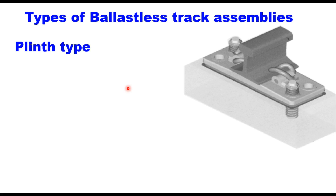There are different types of ballastless track assemblies which have been in use around the world. The first is the plinth type. This is a well-proven design used in more than 10 metro train projects across the world. In India, this system has been used in Bangalore Metro, Nagpur Metro, and probably in Jaipur Metro also.